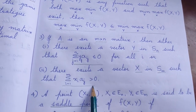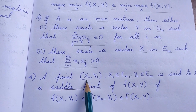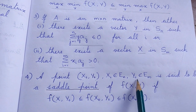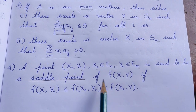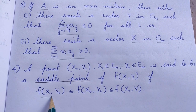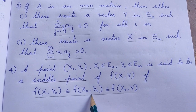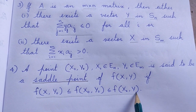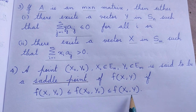Now we go to a definition. A point (x0, y0) where x0 belongs to en and y0 belongs to em is said to be a saddle point of f of xy if the inequality f of x y0 less than or equal to f of x0 y0 less than or equal to f of x0 y holds. This is the definition of a saddle point.